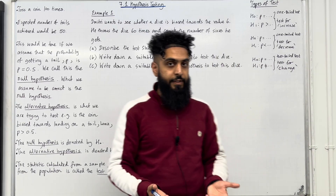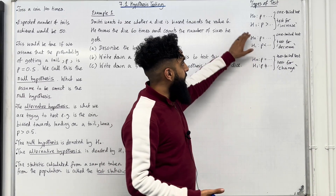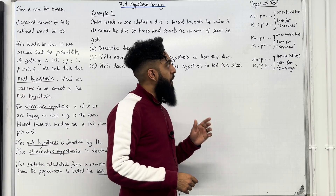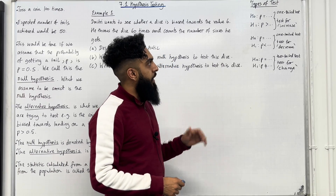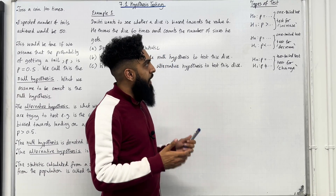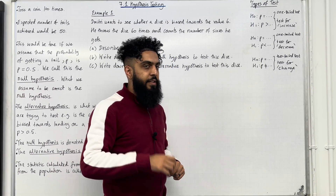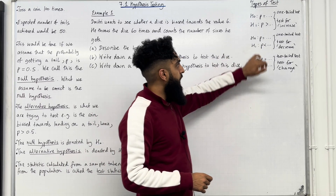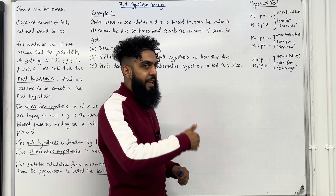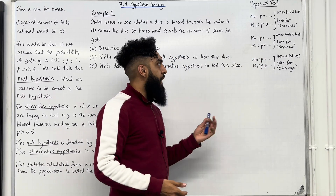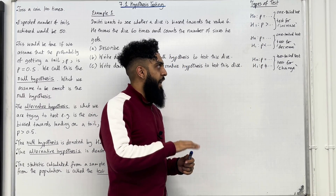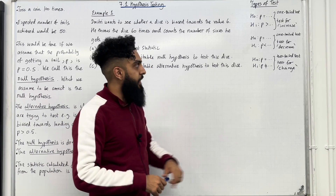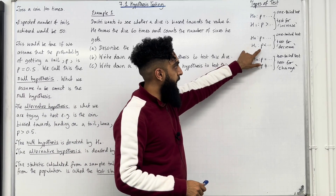Now, types of tests. Here is the first one: H₀: P = [value], H₁: P greater than [value]. This is a one-tail test — we are testing for an increase in the proportion P. The second one: H₀: P = [value], H₁: P less than [value]. This is also a one-tail test — we are testing for a decrease in the proportion P.